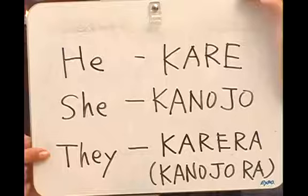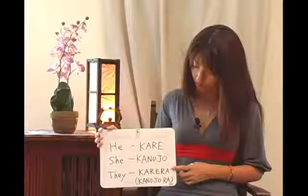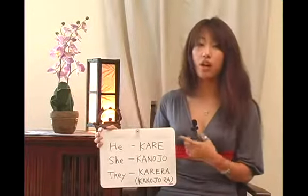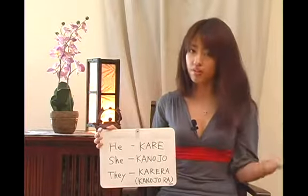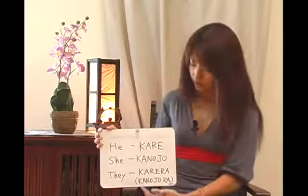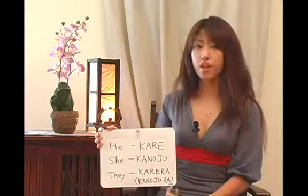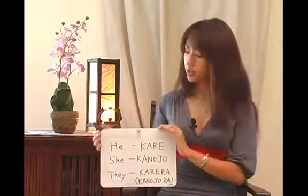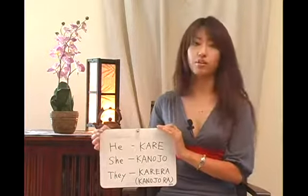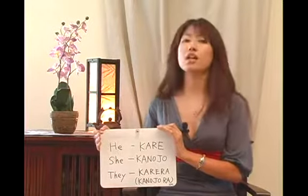'They' — for a mixture of male and female, or just males — is kare ra. You put the word ra after kare. If it's only females, you can use kanojo ra. You can use these words in the previous sentence structure we learned.